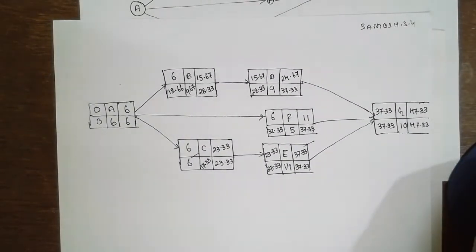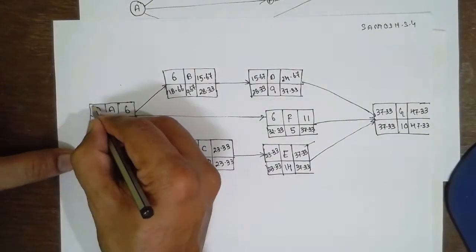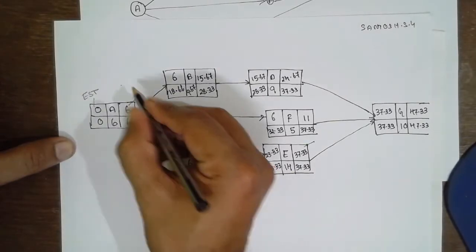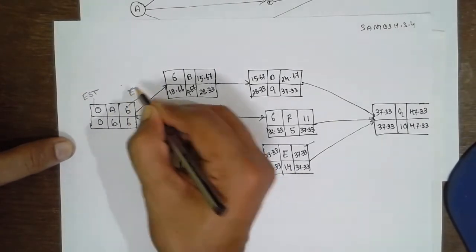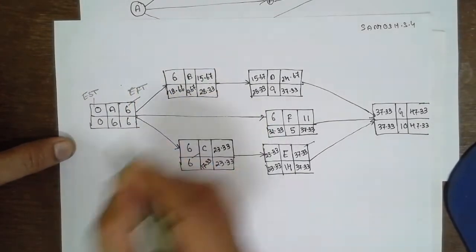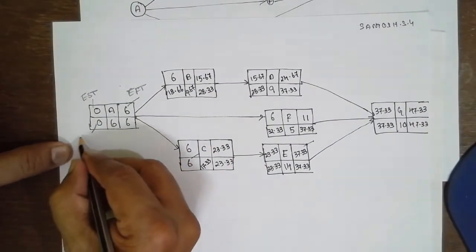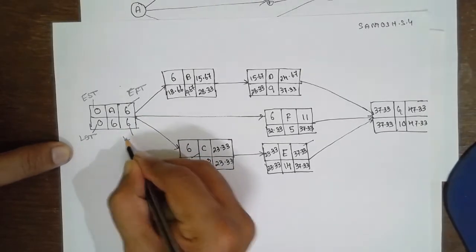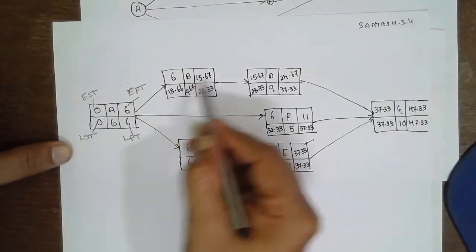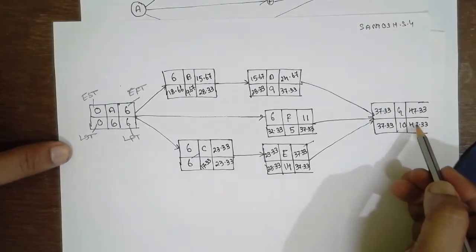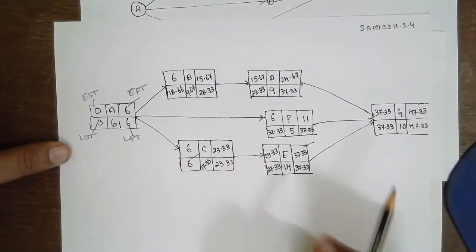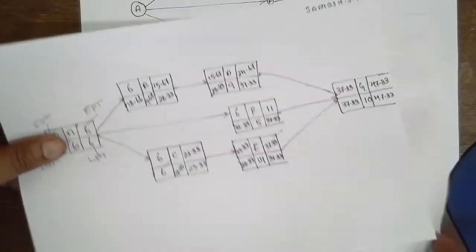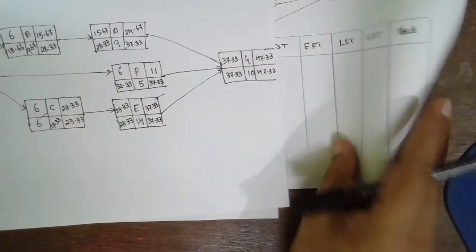The first box in each node is EST, the second is EFT. The third box is LST and the fourth is LFT. The same concept applies to all boxes. Now I am going to substitute these values into the table.